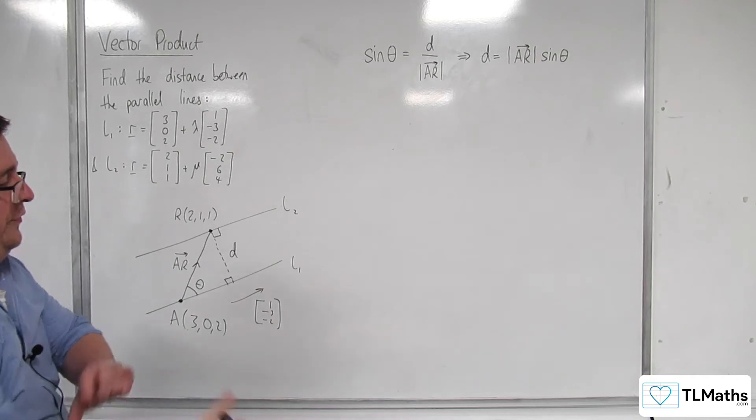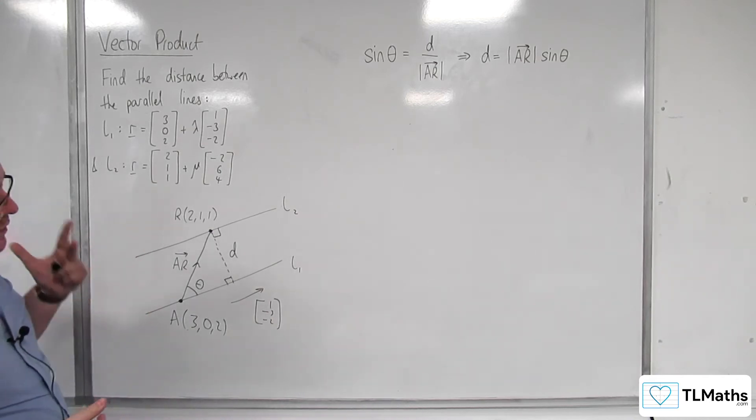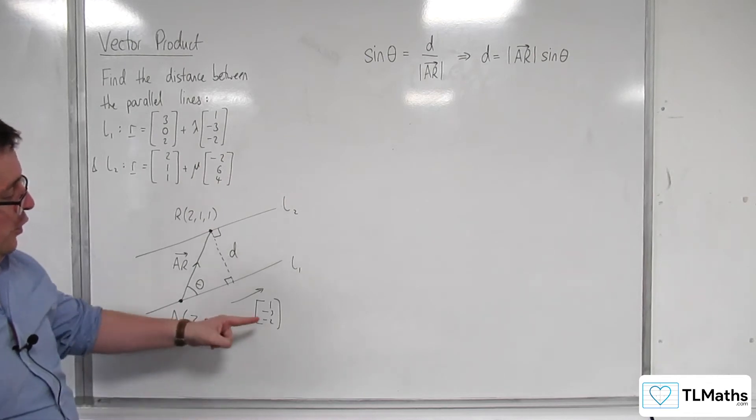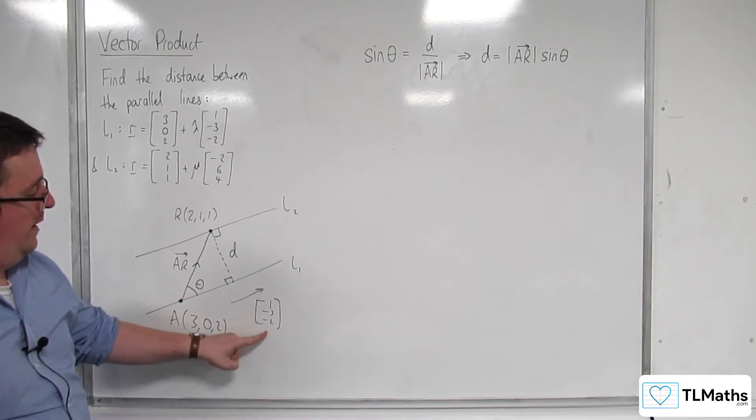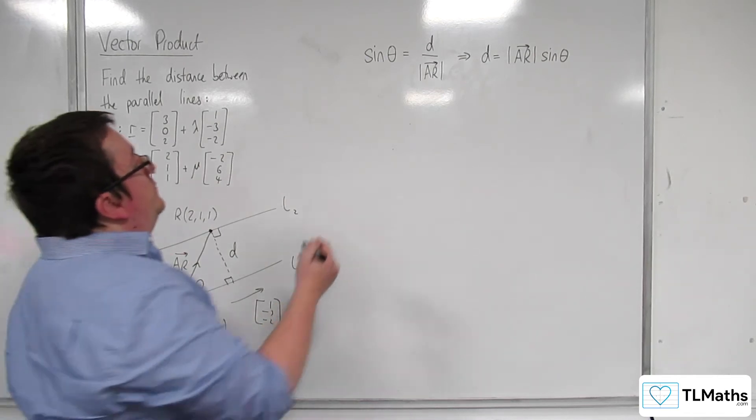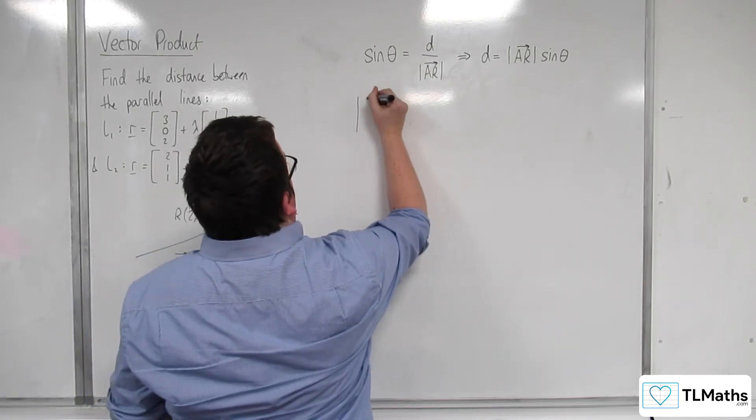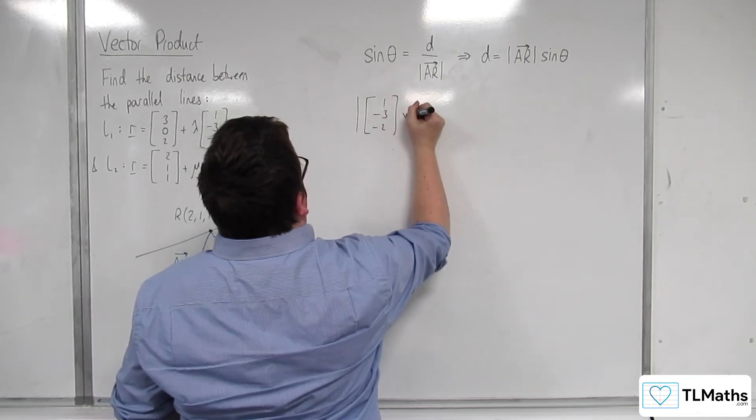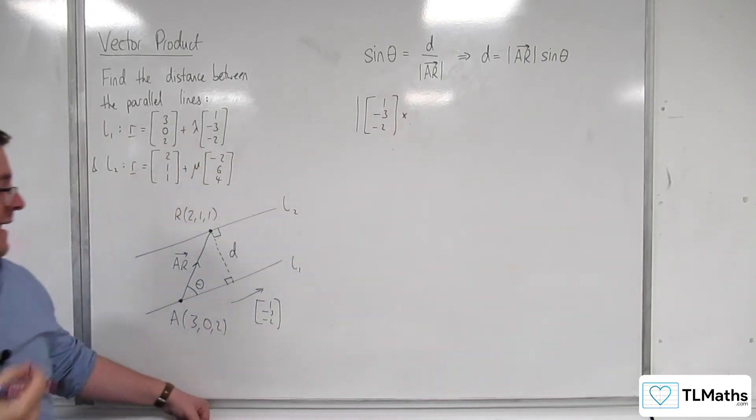We can also say, well, the vector product then of the direction vector of L1 and AR. So the vector product of 1, minus 3, minus 2, crossed with AR.